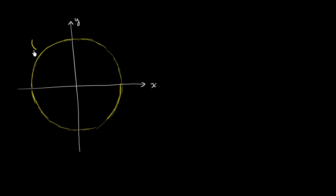What I have attempted to draw here is a unit circle. The fact that I'm calling it a unit circle means it has a radius of 1. This length from the center — and I centered it at the origin — to any point on the circle is of length 1.